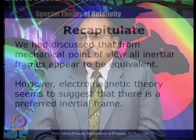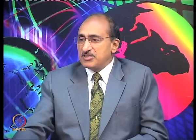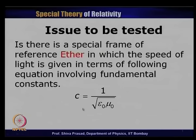This is what I am trying to recapitulate. From a mechanical point of view, all inertial frames appear to be equivalent. However, electromagnetic theory seems to suggest there is a preferred inertial frame of reference in which the speed of light is given by the fundamental constants. We said we must go back to experiment to find out if what we are saying is true. This special frame of reference was decided to be called ether, and we thought that only in this particular frame is the velocity of light given by c = 1/√(ε₀μ₀).